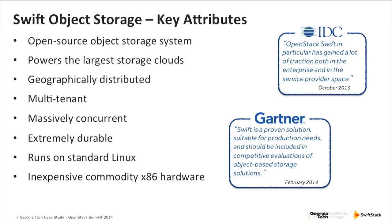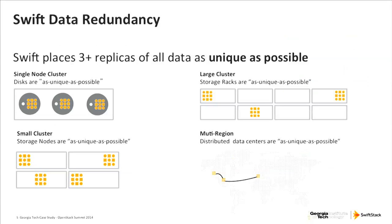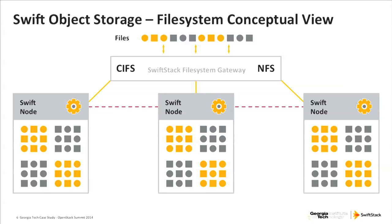That project has continued to power lots of public clouds. Swift distributes data across what we call as unique as possible — whether it's a small or large environment, data gets placed further apart, making it very tolerant of failures. Objects are distributed around and accessible via an object API over HTTP. But in many use cases, we also have an application that speaks CIFS and NFS so that existing workflows and applications have a way to access that data through those protocols.